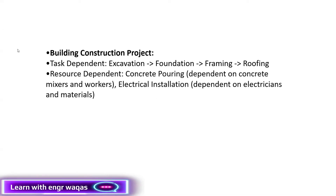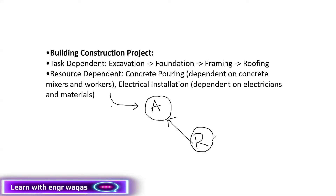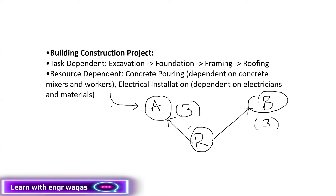Resource dependent activities are activities which are not following the global calendar. These activities are not depending on any other activities. We have defined an activity and assigned it a certain resource. Now, this resource availability is not as per the project schedule — it's a shared resource, also working on another project. Let's say this resource is available three days a week on this project and three days a week on another project. So this activity is going to follow that resource's availability.